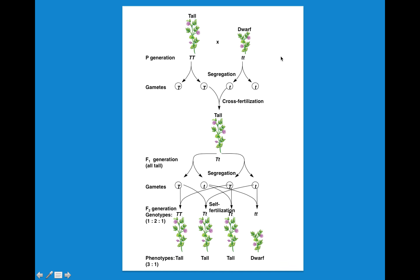This is what it looks like if we look at the plant. A tall plant, true breeding, will have two large T alleles mated with a dwarf plant that has two recessive alleles. The gametes that can be produced from the tall plant are only big T, and the gametes that can be produced from the dwarf plant are only little t. The F1 generation is a combination of those two different alleles, dominant and recessive. The important part becomes when you self-fertilize these — the two alleles separate from each other into the gametes, not going together, producing gametes that have either a big T or a little t allele.